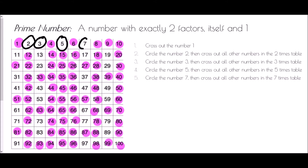Finally, circle the number seven and cross out the other numbers in the seven times table. The seven times table is often people's least favourite, so be careful — just count on seven spaces at a time: 7, 14, 21, 28, 35, 42, 49, 56, 63, 70, 77, 84, 91, 98, and we're done.